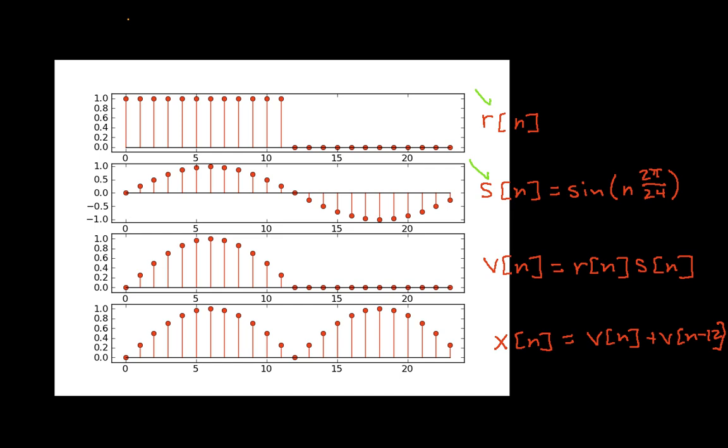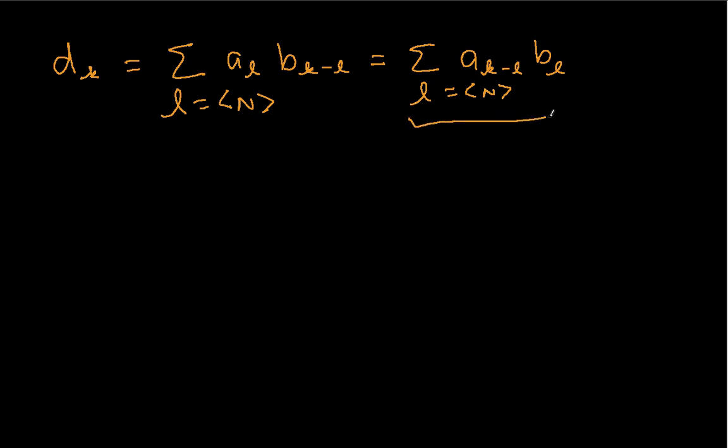So if we go to an empty workspace here, we can say that D of K is the Fourier series coefficient of the product of R and S. This is the summation where L is over 1 period of A_L, B_{K minus L}. And convolution, it turns out you can switch the indices here. So I can also write this as summation of L over N, A_{K minus L}, B sub L. So the idea is that sometimes it's a lot easier to do this form than it is to do this form.